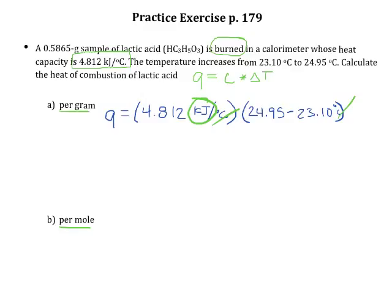So going through and performing those calculations, your book is going to round this to three significant figures because when you do the subtraction, you're going to get 1.85 degrees C. So I'll go ahead and round it to three significant figures. So when we do this calculation, we're going to get a final answer of 8.90 kilojoules.